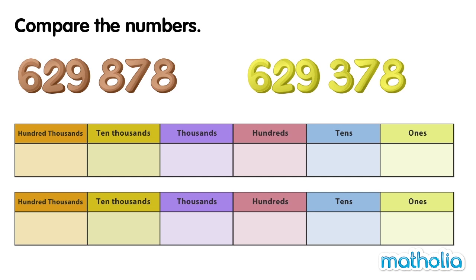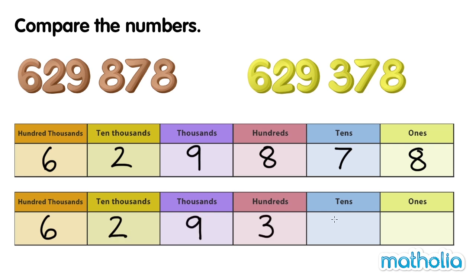Let's compare 629,878 and 629,378. Let's start by writing the numbers in a place value chart. Let's compare the digits in each place starting at the highest place value. We can see that both numbers have 600,000s, 2 ten-thousands, and 9,000s. So we compare the digits in the hundreds place.